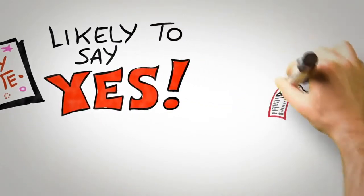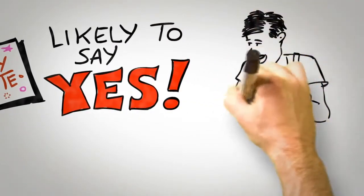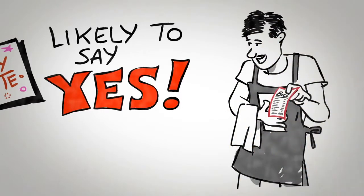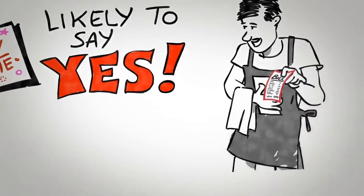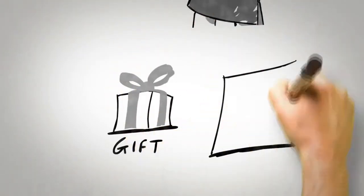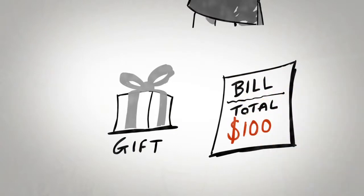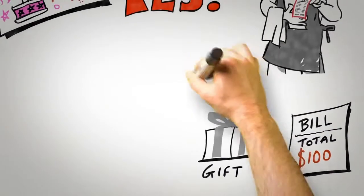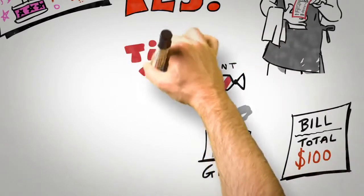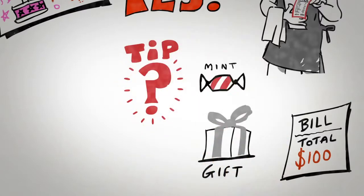One of the best demonstrations of the principle of reciprocation comes from a series of studies conducted in restaurants. The last time you visit a restaurant, there's a good chance that the waiter or waitress will have given you a gift, probably at about the same time that they bring your bill. A liqueur, perhaps, or a fortune cookie, or perhaps a simple mint. So here's the question: Does the giving of a mint have any influence over how much tip you're going to leave them? Most people will say no, but that mint can make a surprising difference.